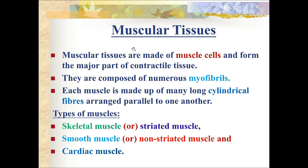Muscular tissue is the third type. Muscular tissues are made up of muscle cells and form the major part of the contractile tissue. Muscles contract and relax, helping in the movement of the body as well as internal organs. They are composed of numerous myofibrils - 'myo' is the term for muscle. Each muscle is made up of many long cylindrical fibers arranged parallel to one another.